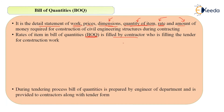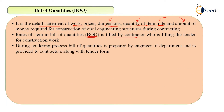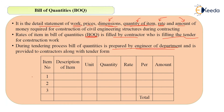During the tendering process, the Bill of Quantities is prepared by the engineer of the department and provided to contractors along with the tender form. Contractors fill in the rates during the tendering process. The BOQ is a statement of the amount that will be needed for a particular item of work.